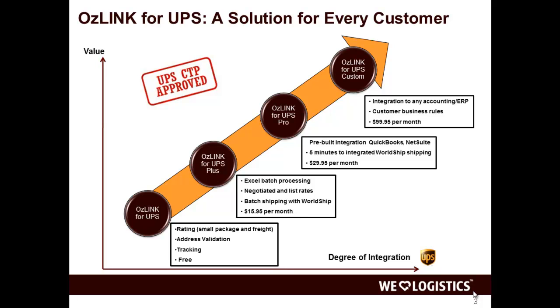Next is OzLink for UPS Plus, an advanced front office tool that provides additional capabilities such as showing both negotiated and list rates, shipping margin, as well as supporting international origins.